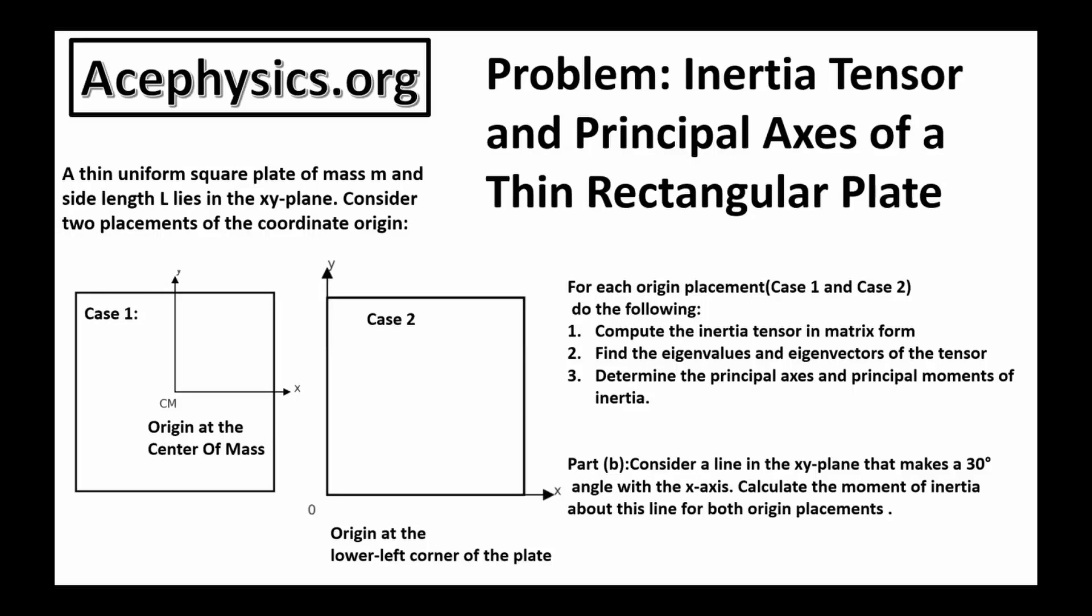In this problem we're going to discuss the inertia tensor using two different coordinate systems. In case two we're going to use a coordinate system where the origin is at the lower left corner of the plate. This is the y-axis and this is the x-axis. And so what the question asks us to do is for each origin placement do the following.